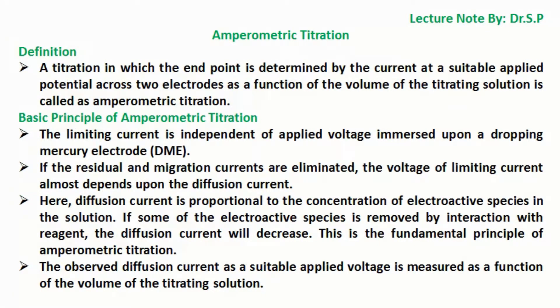Basic principle of amperometric titration: The limiting current is independent of applied voltage immersed upon a dropping mercury electrode DME. If the residual and migration currents are eliminated, the voltage of limiting current almost depends upon the diffusion current.